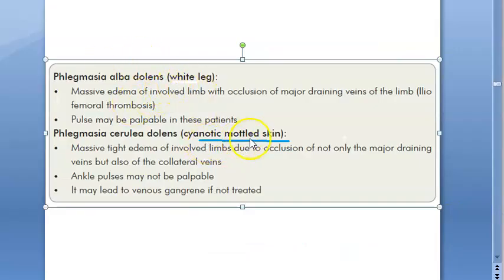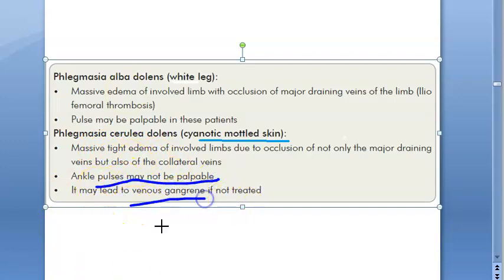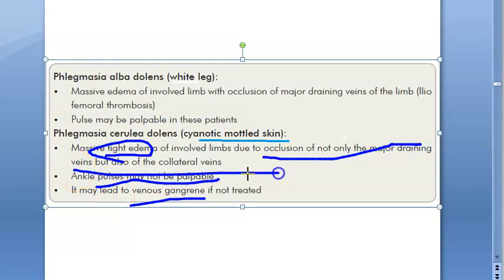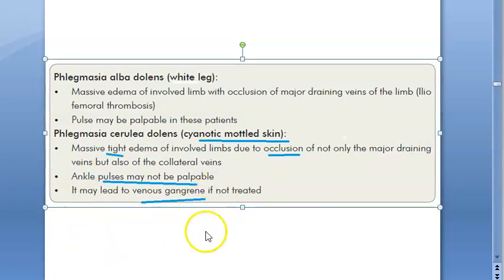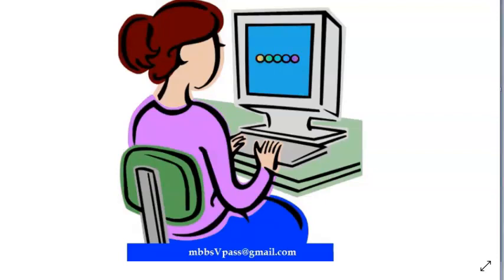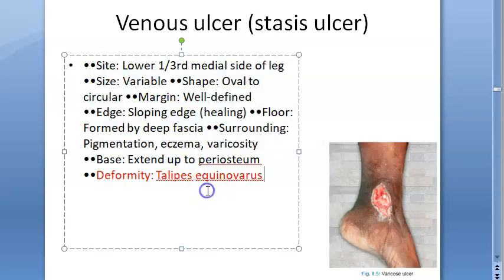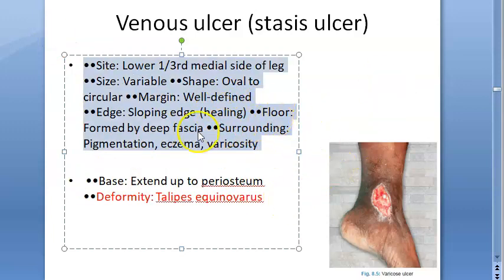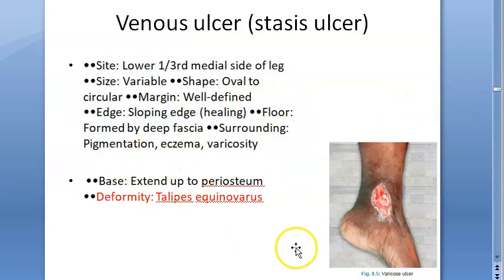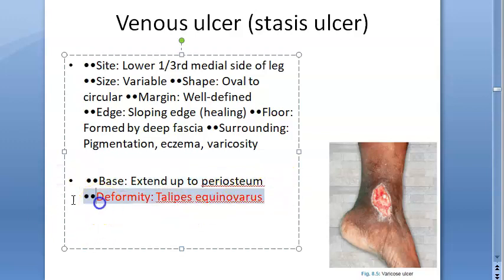Phlegmasia alba dolens (white leg) and phlegmasia cerulea dolens (cyanotic mottled skin) present with massive tight oedema; the ankle pulse may not be palpable and venous gangrene can occur due to occlusion of major draining and collateral veins. If an ulcer is present, perform a full assessment: site, size, margin, edge, floor, surrounding tissue, and pigmentation. Also check for deformity such as talipes equinovarus.